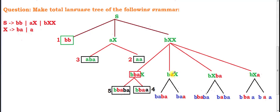After putting all values of X, we get the final terminal strings. The first value 'ba' and the second value 'a' are substituted at each position. This completes the total language tree of this grammar, and as you can see it is representing all the strings of this grammar.